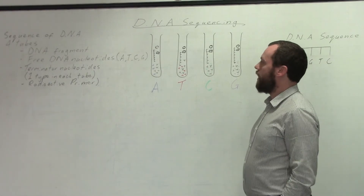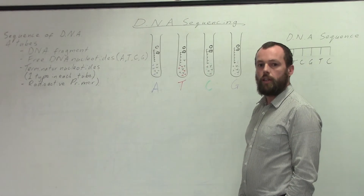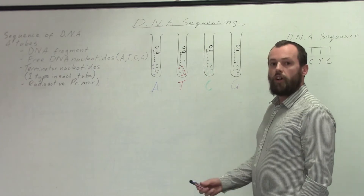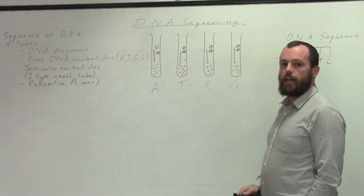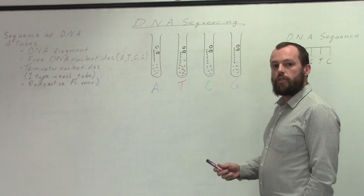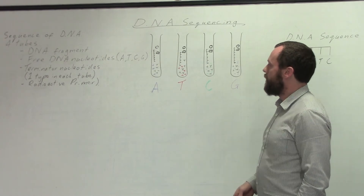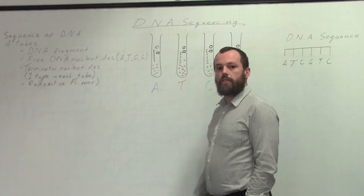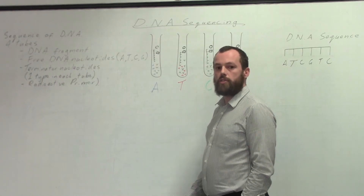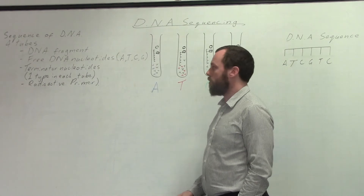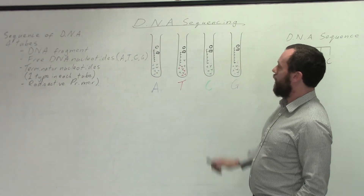This video is looking at DNA sequencing. In order to find out the sequence of a section of DNA, first of all you need to set up four test tubes. Each test tube needs to have several single strands of DNA which it is that you are trying to sequence. You can see that here, represented by the black line.